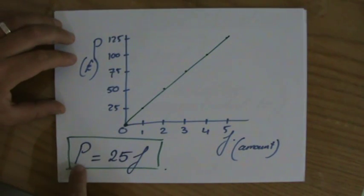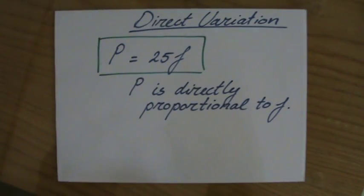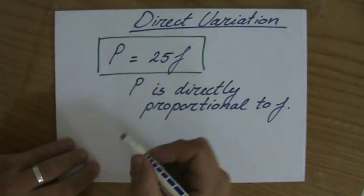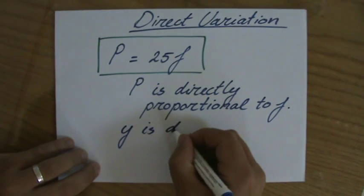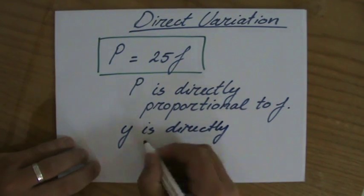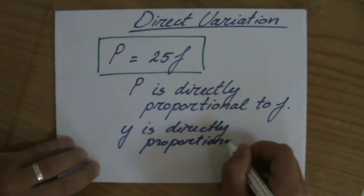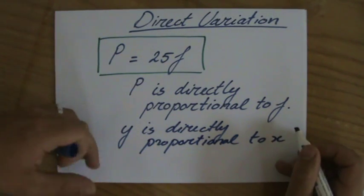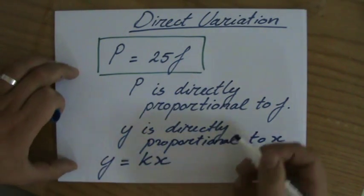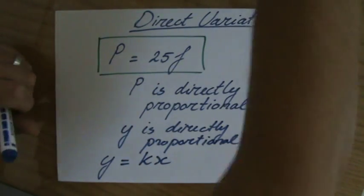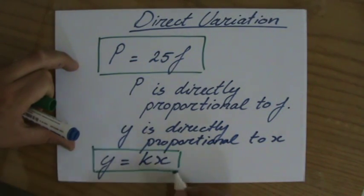P equals 25f. But now in more general terms, when y is directly proportional to x, then the general equation is y equals k times x. That's something perhaps you have to remember. However, if you understand it, you don't. Y equals a certain constant, a particular number, times x.